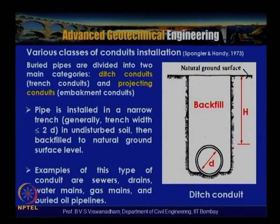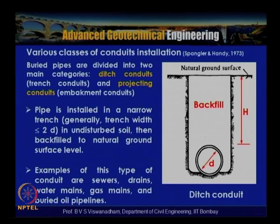Before looking into Marston's theory, let us revisit the different types of buried pipe installation: ditch conduits and projecting conduits. If a pipe is installed in a narrow trench — generally less than twice the diameter of the pipe — in undisturbed soil and then backfilled to the natural ground level, this is called a ditch conduit.